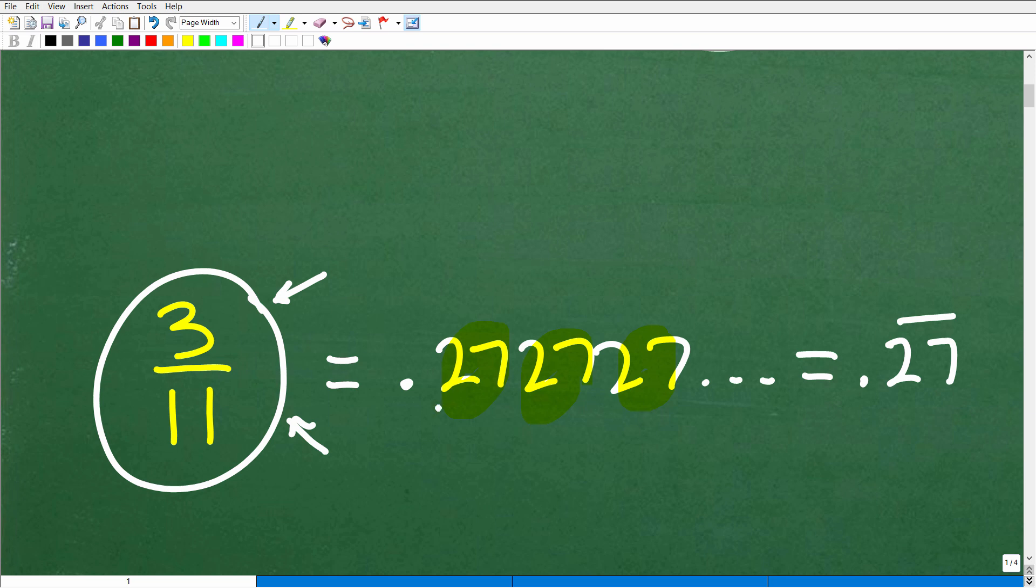Now, this decimal here, this repeating decimal 0.27 repeating, is not the same as 0.27. Writing decimals like this, which are terminating decimals - in other words, the digits stop - writing this as a fraction, that's very easy. But writing repeating decimals as a fraction, well, this is a different ballgame altogether.